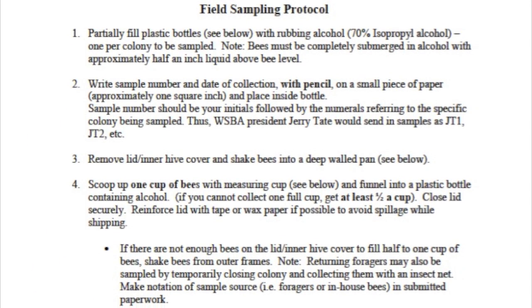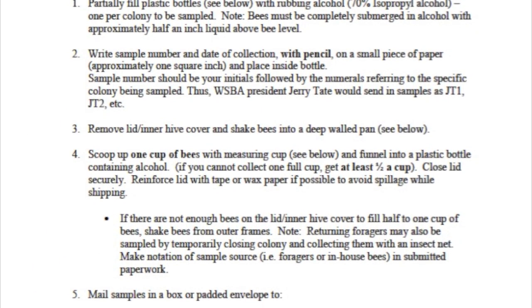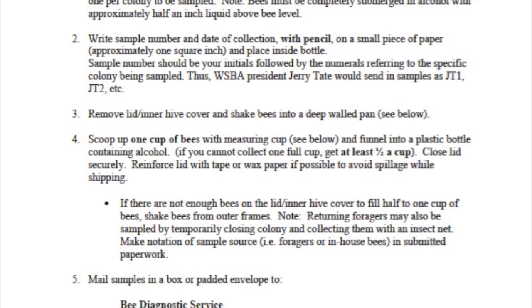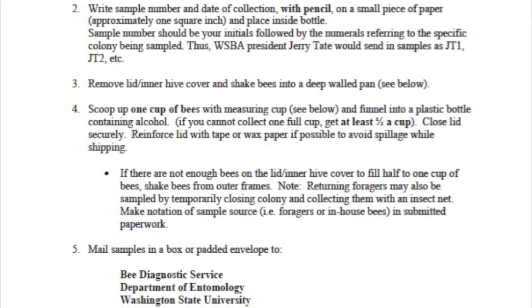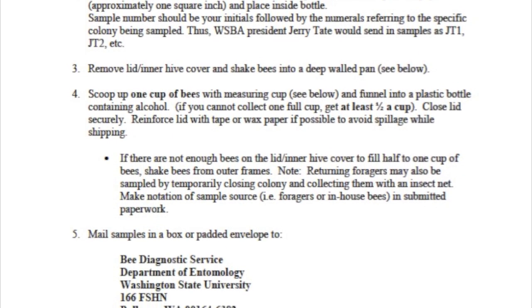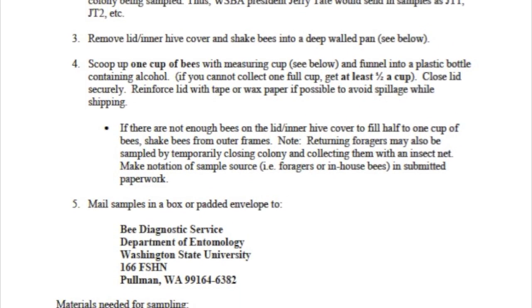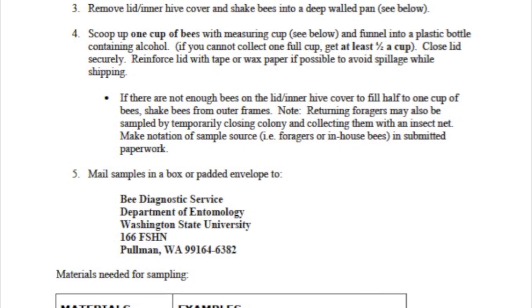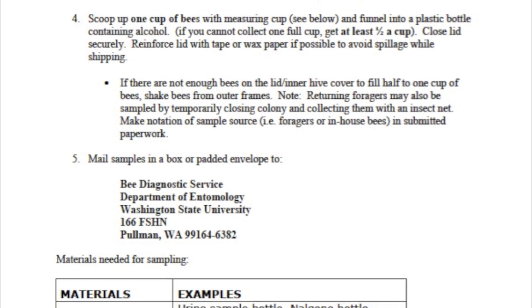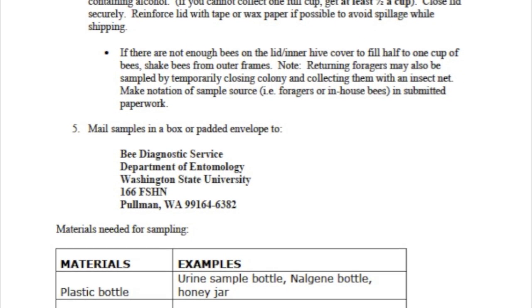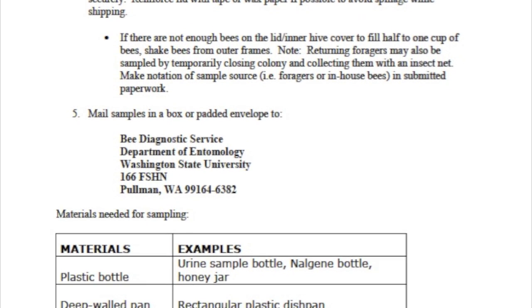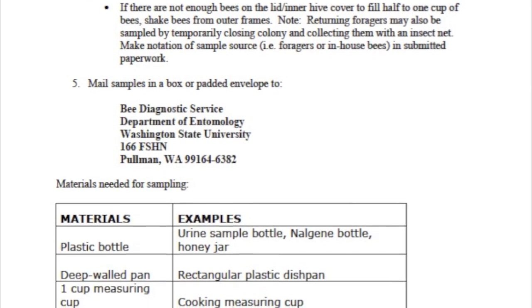On the second page of the registration form is the field sampling information. This tells you what to use when you go out, how to do it, how to scoop up the bees, and where to send it. You're going to want to send it to the Bee Diagnostic Service, so that will come to me. The registration form is very important so I know everything about the history of the samples you're submitting.